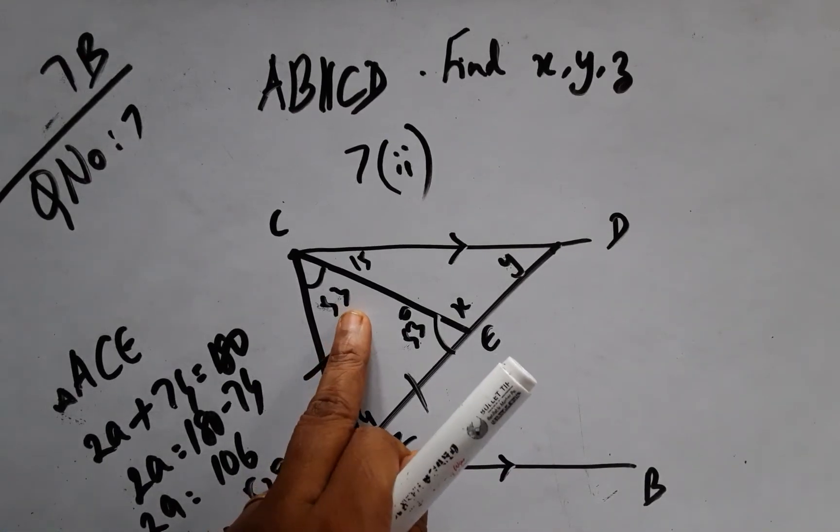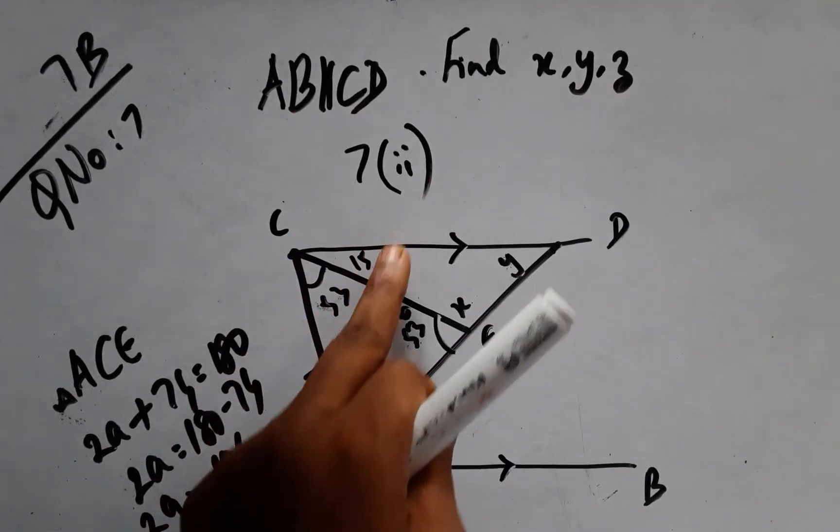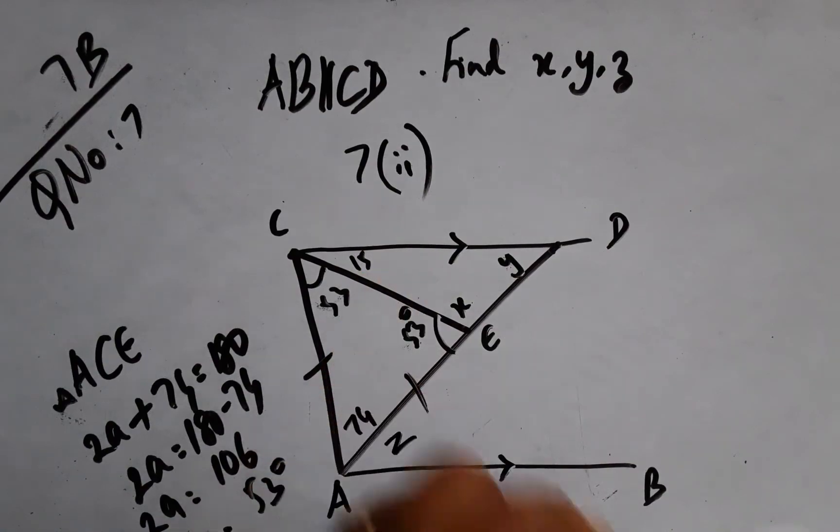Once A is achieved, now my entire angle C will be 53 plus 15, comes to 68 degrees.